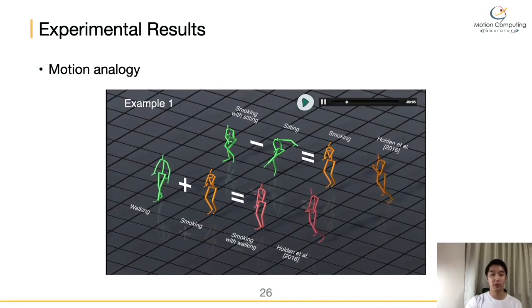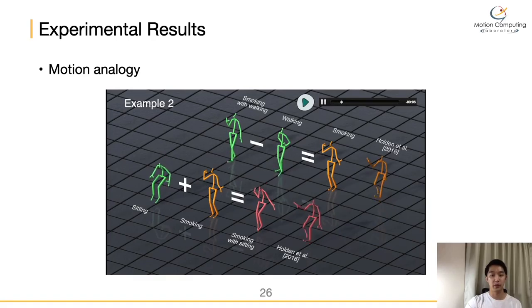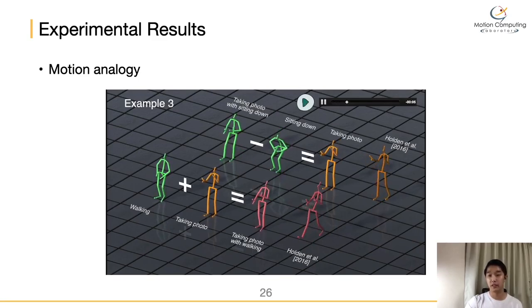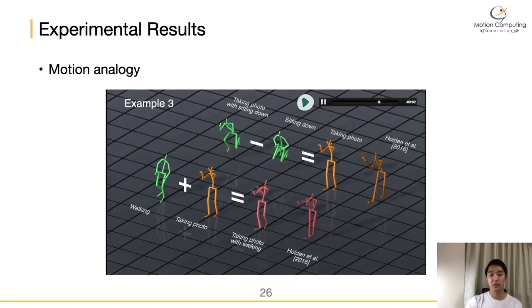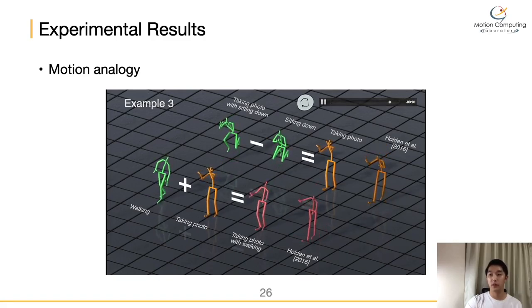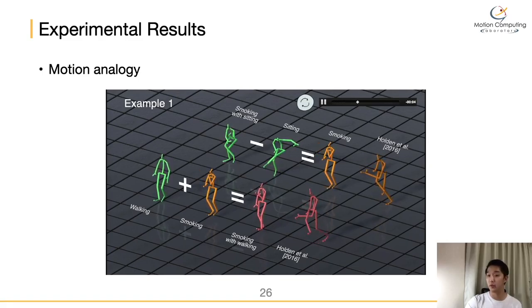The next experiment is motion analogy. From this experiment, we can understand how our model organizes the motion manifold to represent the features of directions. We perform vector algebraic operations with the latent vectors encoded from different motions and explore how the model organizes the latent space. Green characters are the ground truth. Bright orange and pink characters are generated from algebraic operations in the latent space from our model. One can see that the motion manifold obtained with our model supports analogies well. However, the dark orange and pink characters from Holden's model do not work.